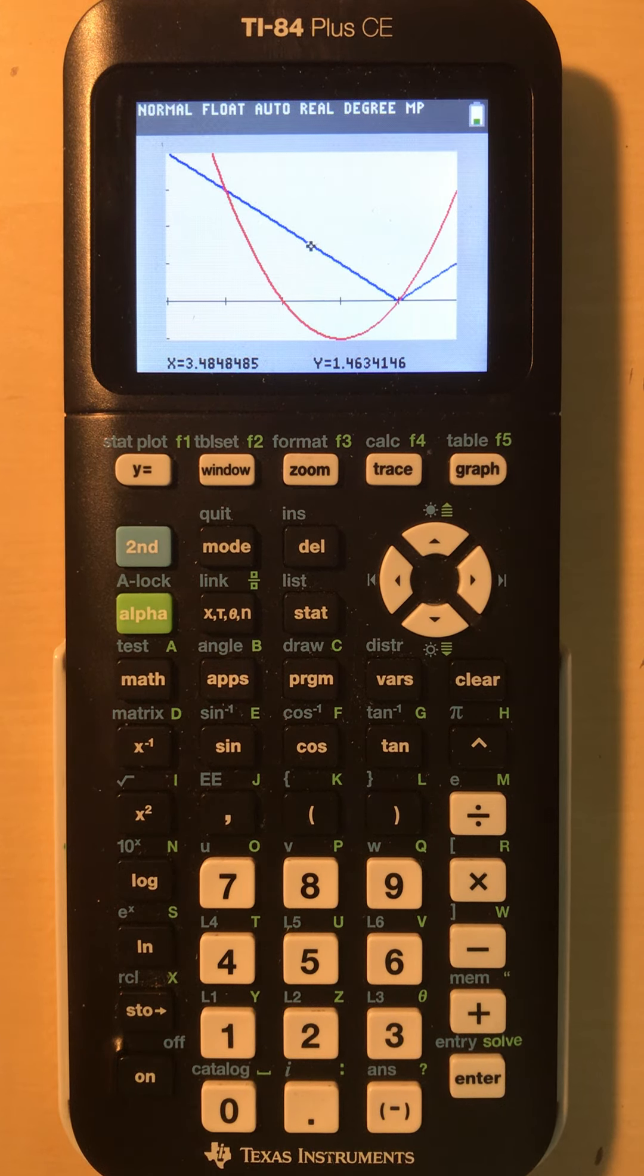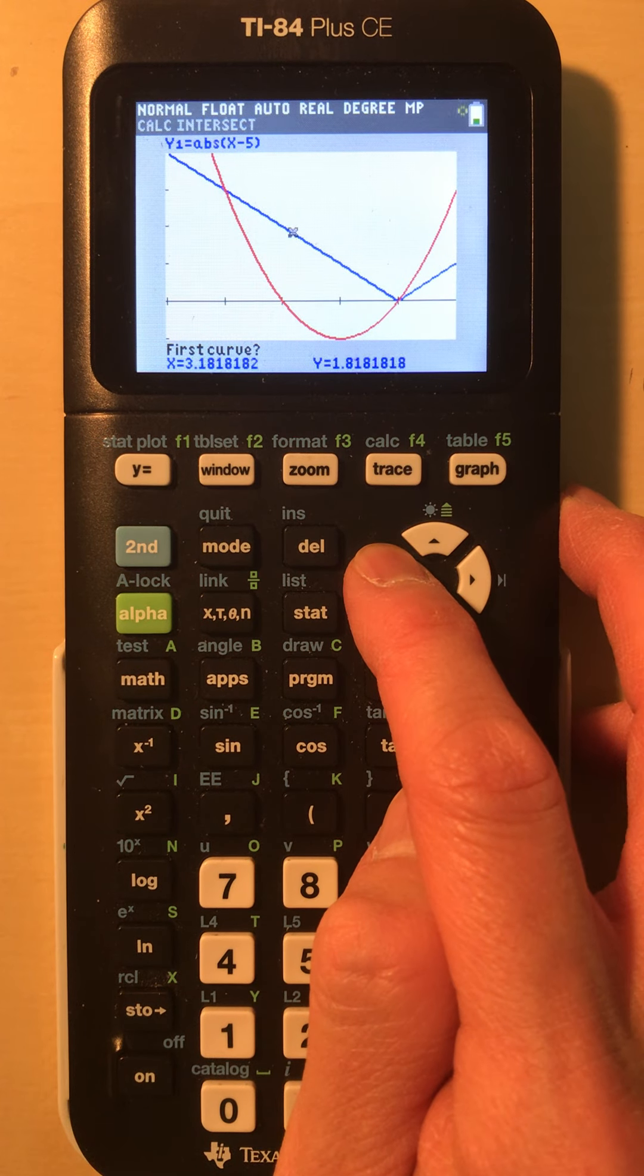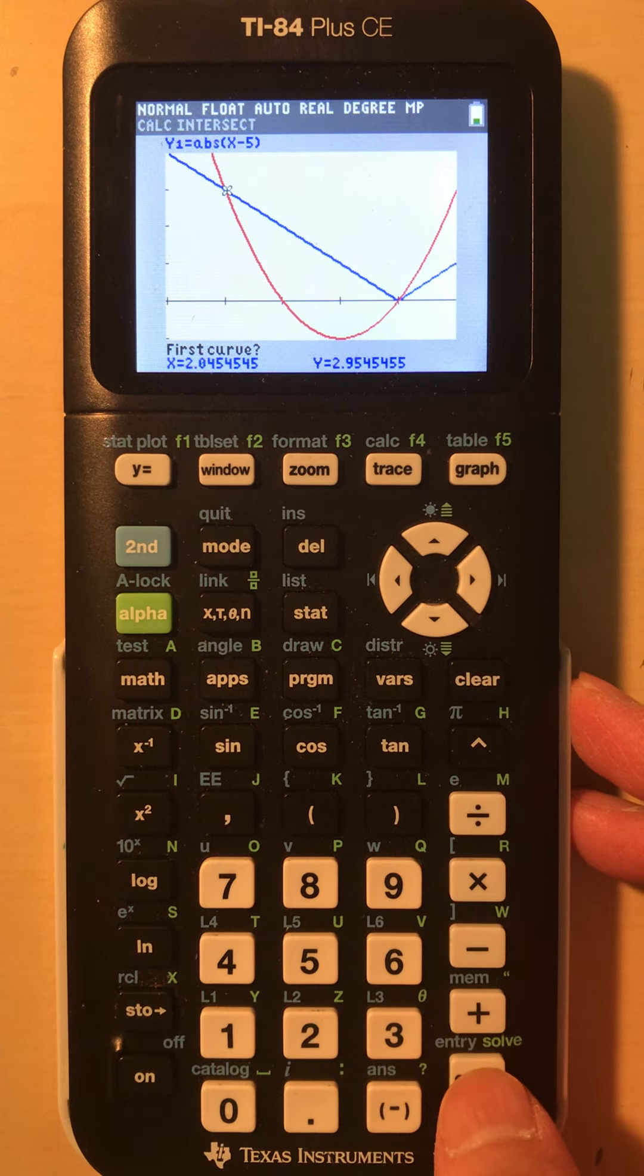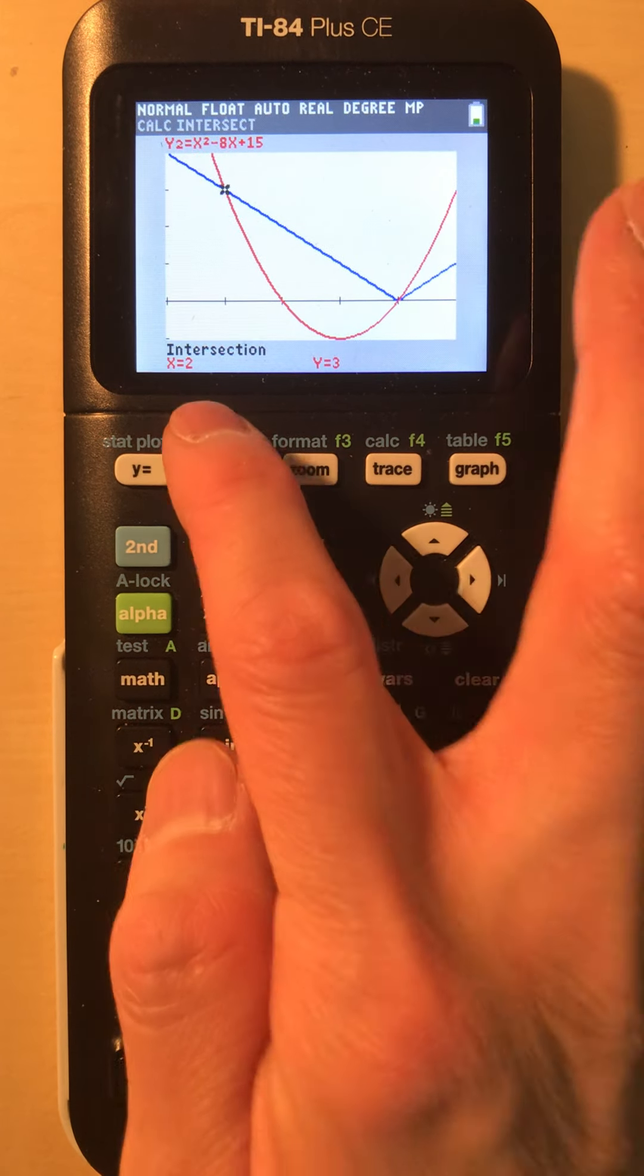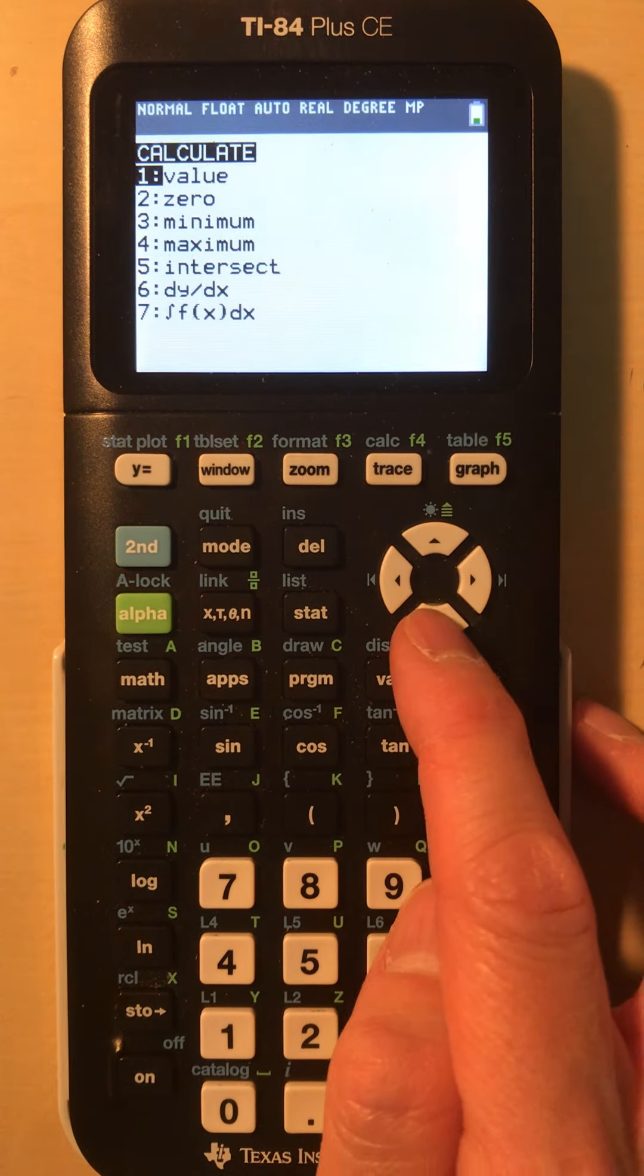You can clearly see the intersection points. Let's go ahead and calculate our first intersection point. First curve, yes. Second curve, yes. Guess. There we go. As we suspected, x equals 2. And then let's do the second one.